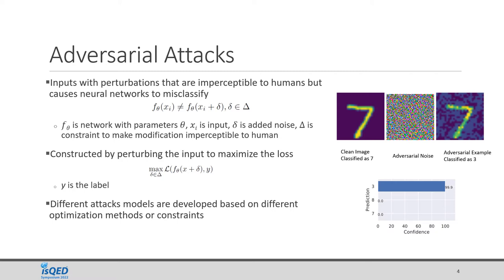The figure on the right shows an adversarial example: an image of digit 7 with added perturbations, which is classified as an image of digit 3. As you can see, the adversarial example is classified as digit 3 with very high confidence.